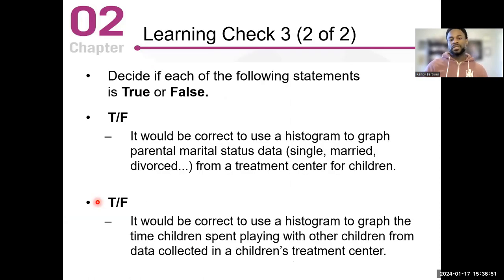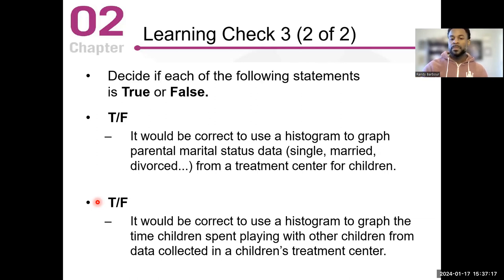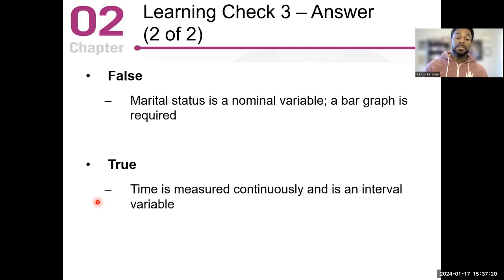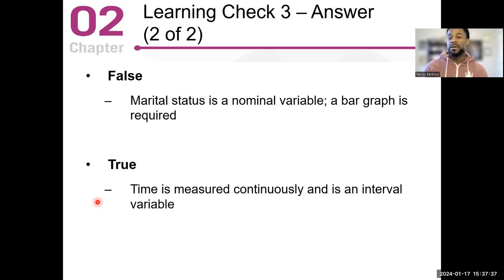True or false: it would be correct to use a histogram to graph parental marital status from a treatment center for children. That should be false — marital status is a nominal variable, so you would not use a histogram; you would more likely use a bar graph. For the second one, if you're using time — time is considered a continuous variable and an interval variable — then you would use a histogram for that particular variable, so that's true.